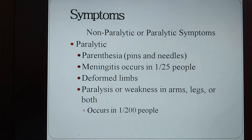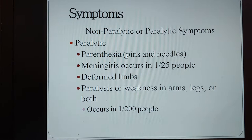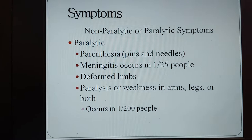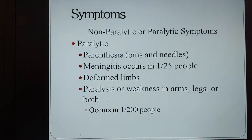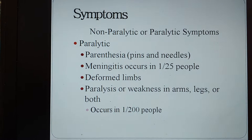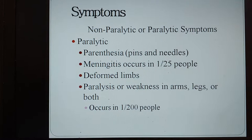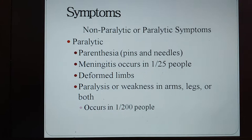The paralytic symptoms include paresthesia — the pins-and-needles feeling you might get when your feet feel numb after sitting too long. Meningitis occurs in one out of 25 people with polio. Other symptoms include deformed limbs, especially in the hips, ankles, and feet, and severe muscle spasms and pain. There is paralysis or weakness in the arms, legs, or sometimes both, and paralysis occurs in one out of 200 people.